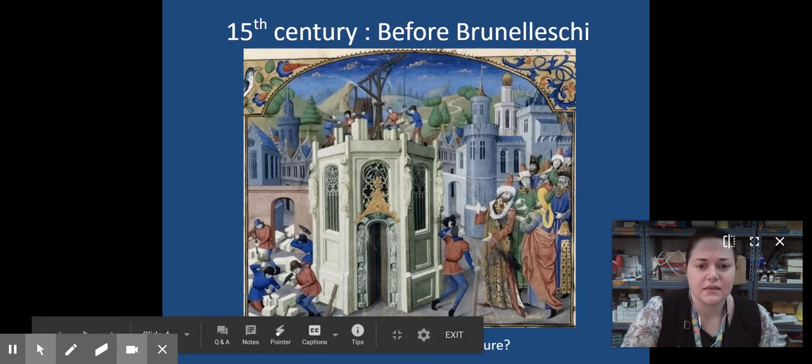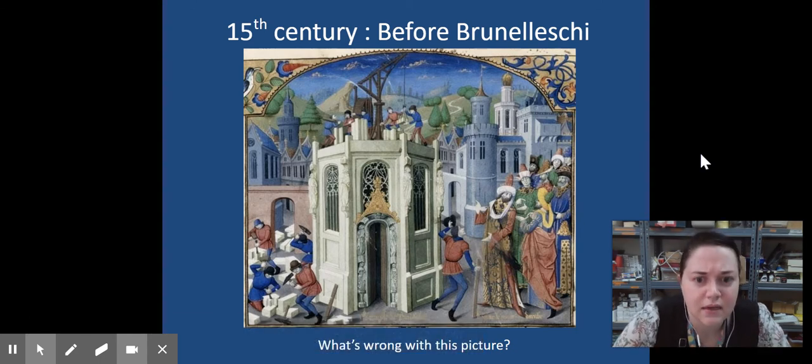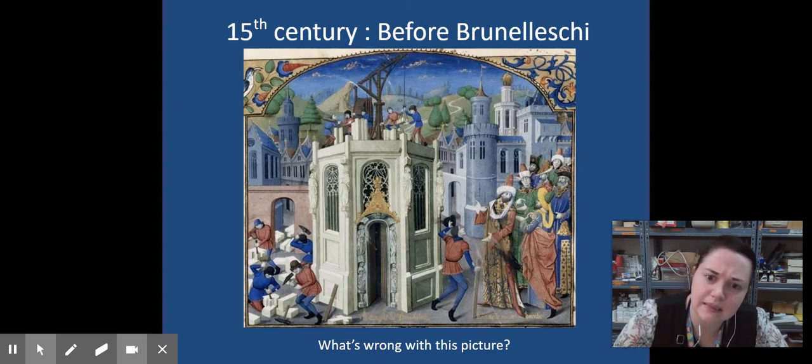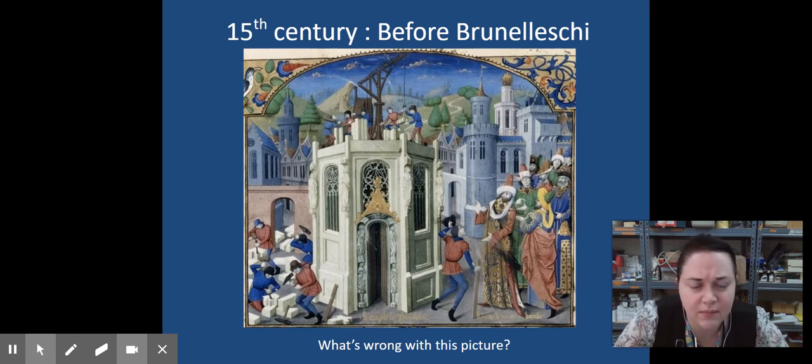Before Brunelleschi, this is how artists painted buildings. What is wrong with this picture? Think of those characteristics of space. Where do we see some errors?